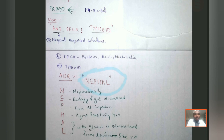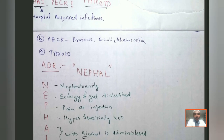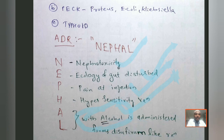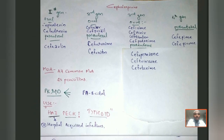The ADR mnemonic for cephalosporins is NEPHAL. 'N' stands for nephrotoxicity. 'E' refers to ecology of the gut being disturbed, as the normal flora is inhibited. 'P' is for painful injection. 'H' is for hypersensitivity reaction. 'AL' stands for alcohol — when cephalosporins are administered with alcohol, they produce a disulfiram-like reaction.